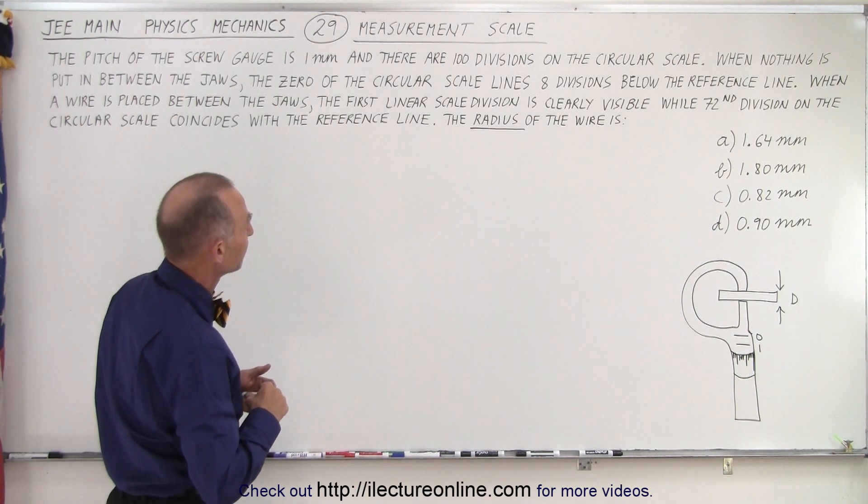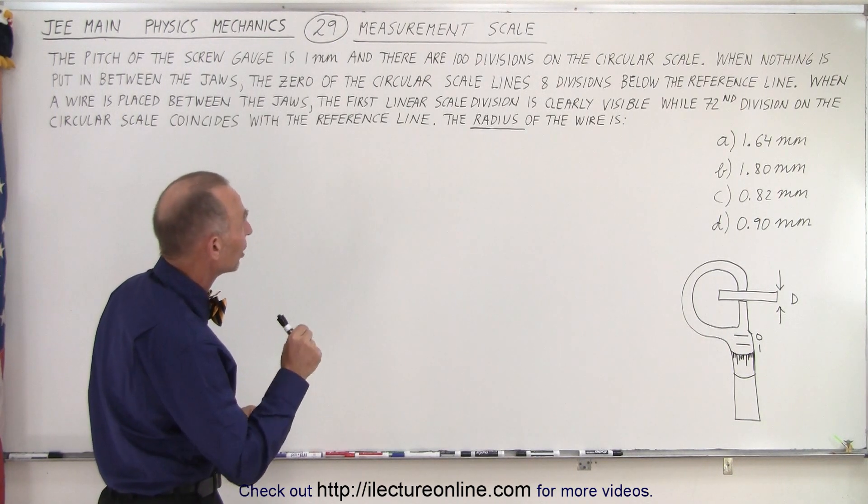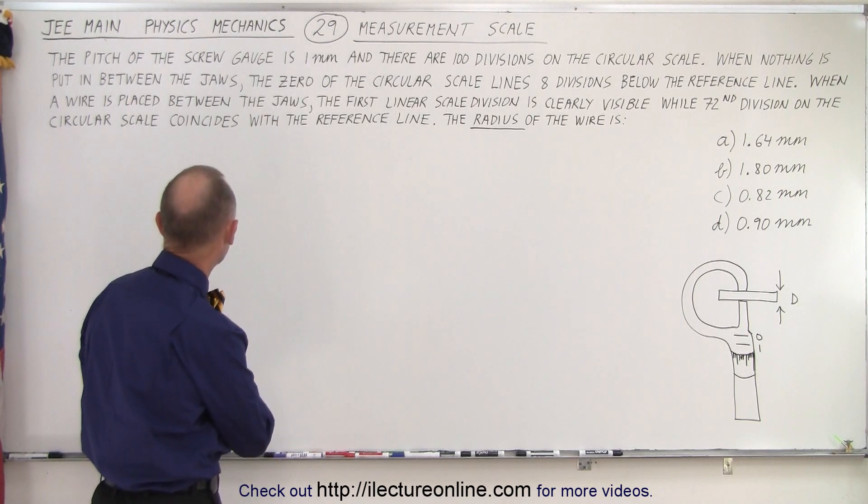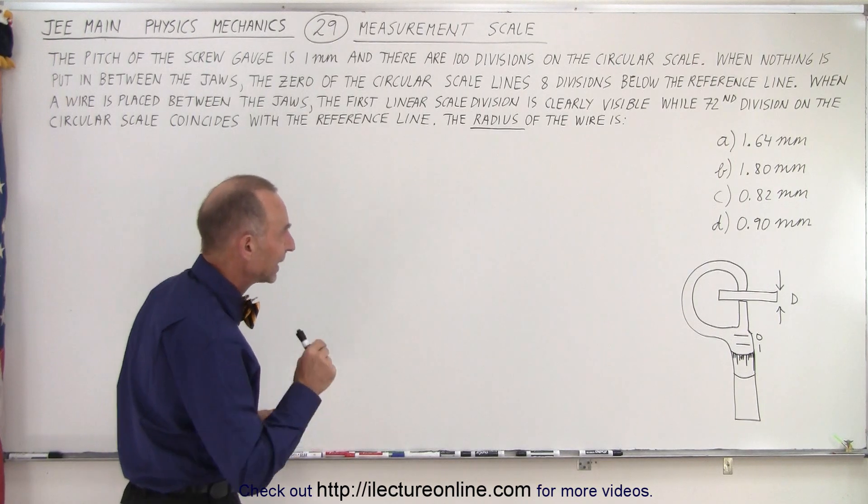When a wire is placed between the jaws, the first linear scale division is clearly visible while the 72nd division on the circular scale coincides with the reference line. The radius of the wire is?